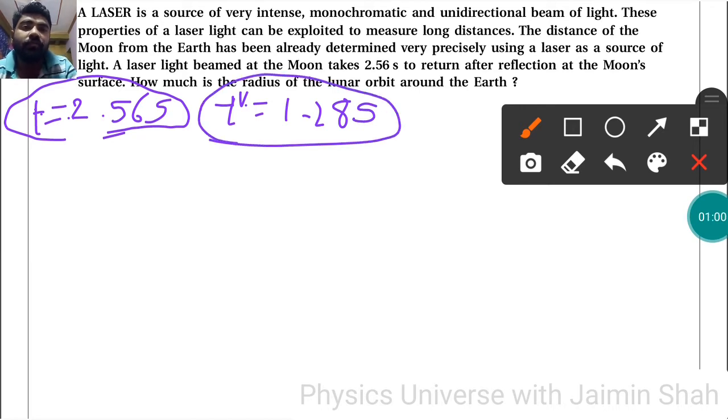So this time to take from only from earth to moon only, one side. Now we know that speed of light c is equal to 3 into 10 raise to 8. It is meter per second.